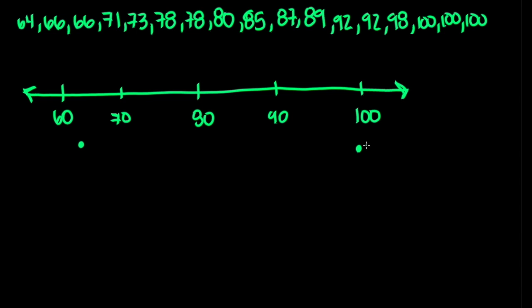The median of the lower half of the data is called the first quartile, and the median of the upper half of the data is called the third quartile. First let's find the median. To find the median we need to find the middle number out of all of these numbers. There are 17 numbers given to us, which means the middle number is the ninth number counting forwards or backwards. Our ninth score from either end is 85, so our median is 85.